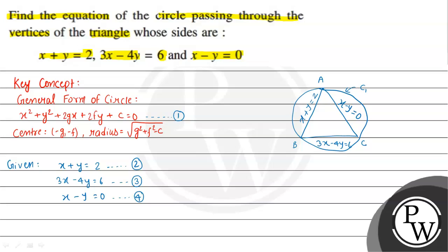If we look here, when we solve these two lines together, their solution gives us one point. Similarly, solving this straight line and that straight line gives us the XY coordinates of another vertex. And if we solve this line and this line, we get the coordinates of point C. So we will solve each pair of equations one by one.